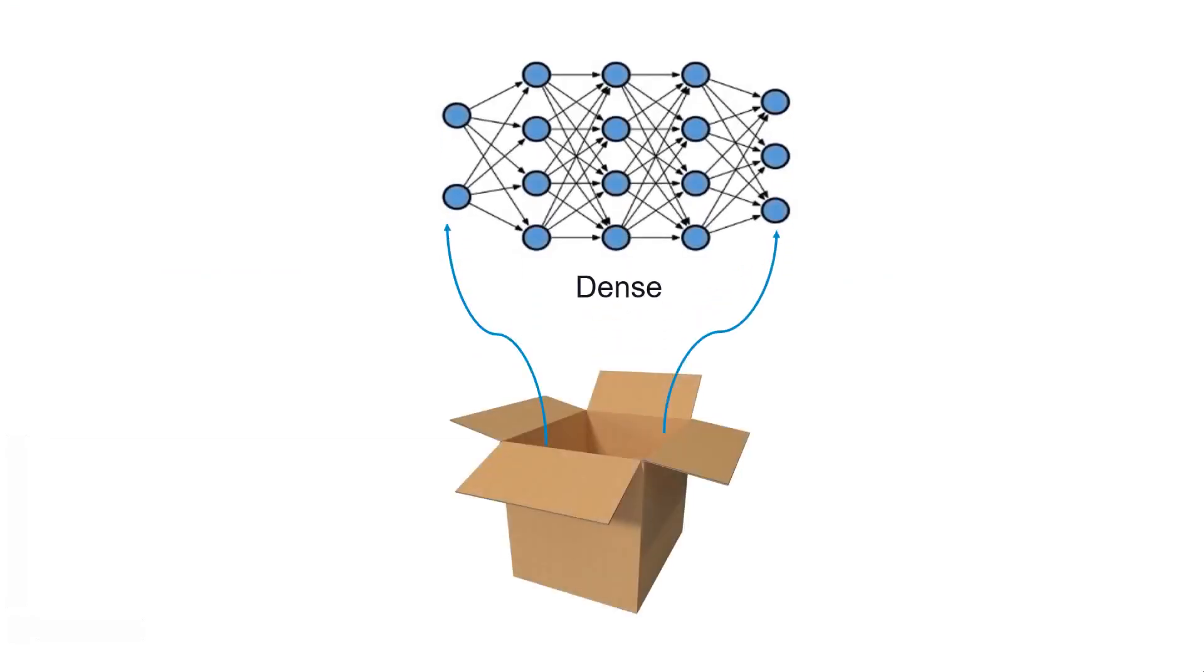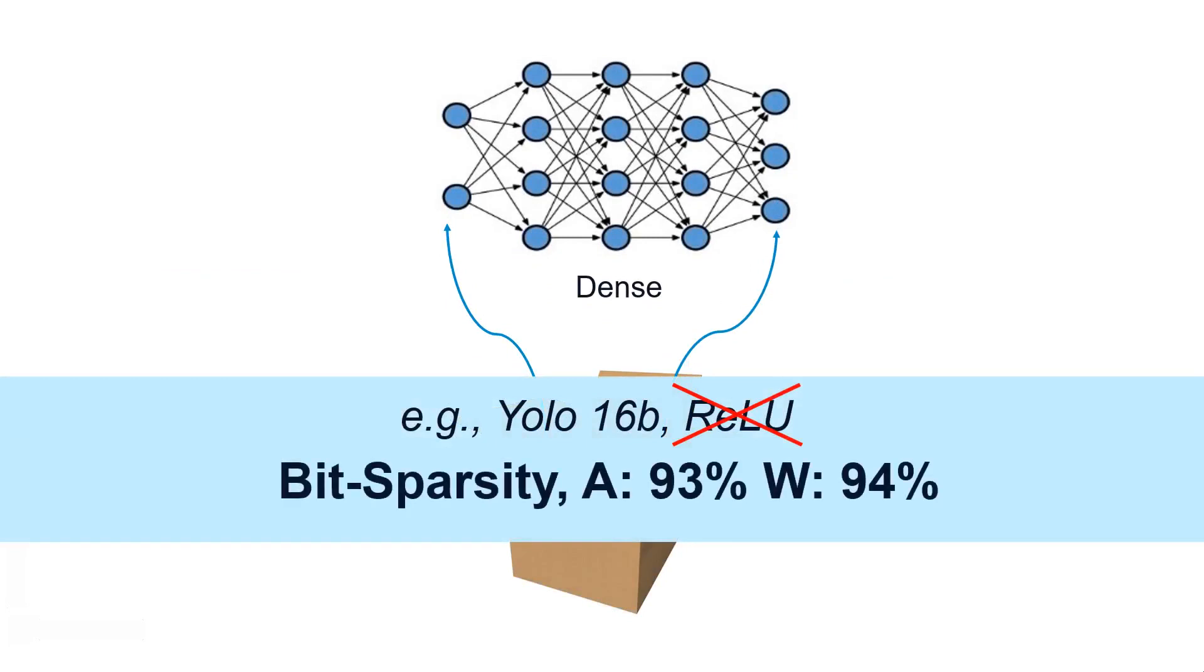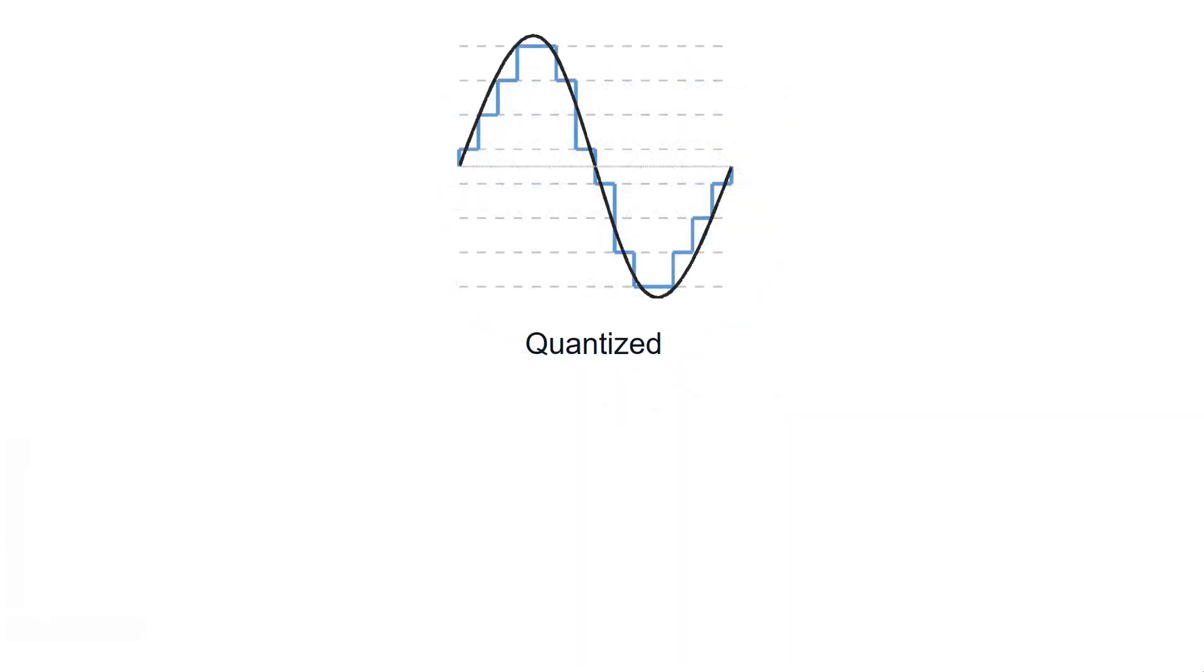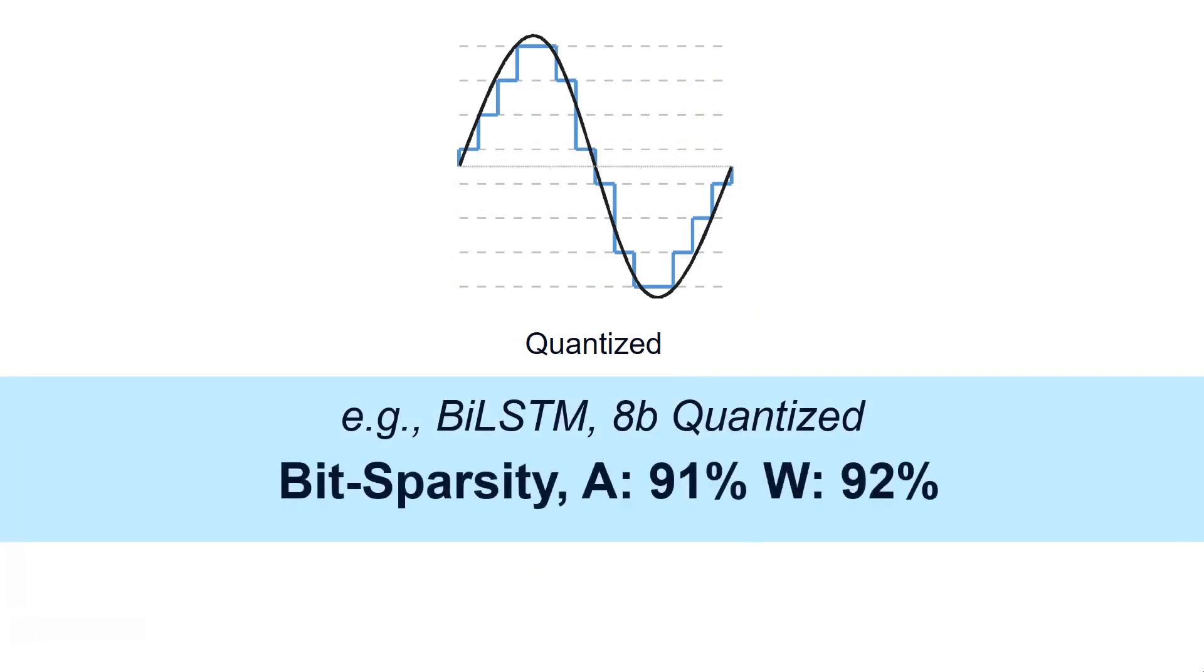Even in out-of-the-box dense networks such as Yolo, which doesn't even use ReLU function, the bit sparsity is around 93% for the activations and weights. This phenomenon persists in quantized networks as well. For instance, 8-bit quantized LSTM networks have more than 90% sparsity in both activations and weights.